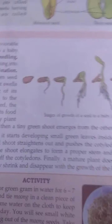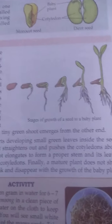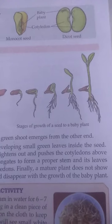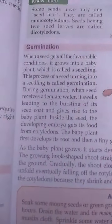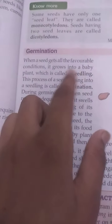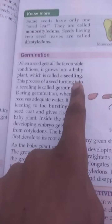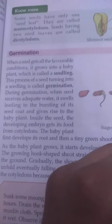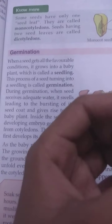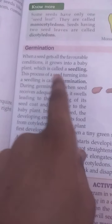Now we are going to look at germination. Germination is the small stages of growth of a seed into a baby plant. When a seed gets all the right conditions, it grows into a baby plant called a seedling.